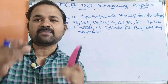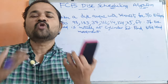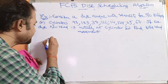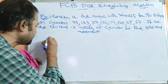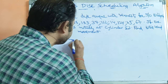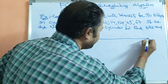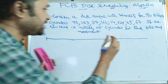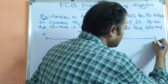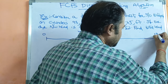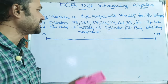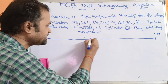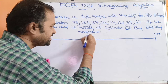Our target is to find how many total head movements are needed. We have 200 cylinders from 0 to 199. The first cylinder is 0 and the last cylinder is 199. Initially, the read-write head is at cylinder 53.